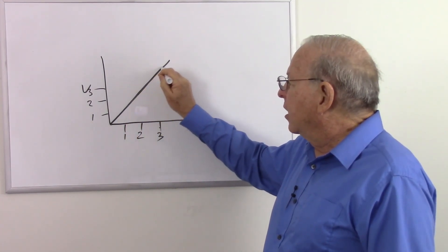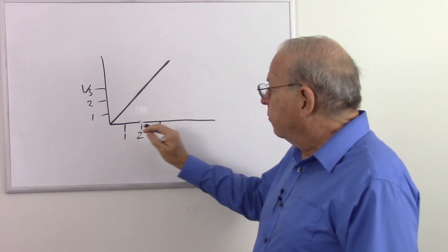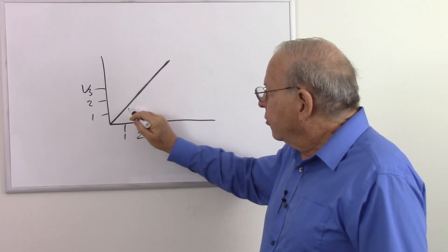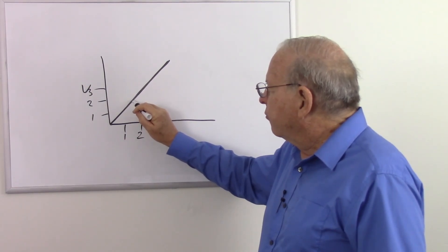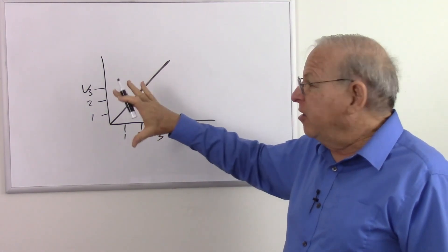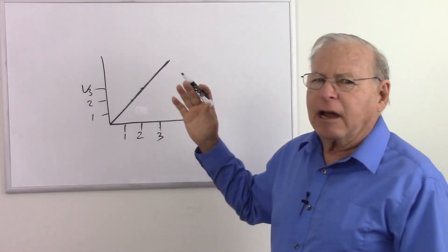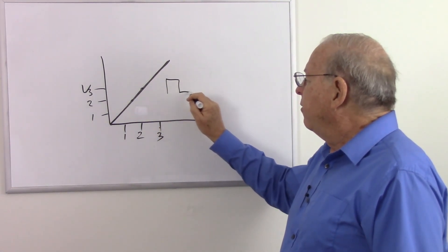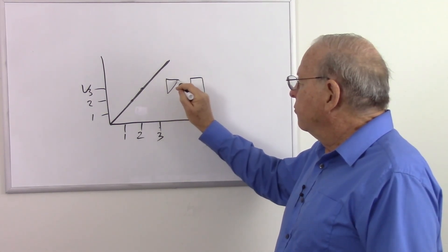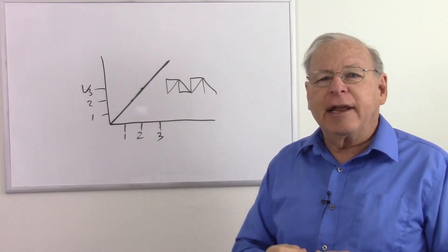That straight-line relationship could be useful for a timing circuit where we get a linear relationship between voltage and time. Or another application: if you have a square wave generator and you want triangle waves, an integrator can be used to turn those square waves into triangle waves. So let's take a look at how the integrator works.